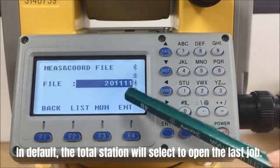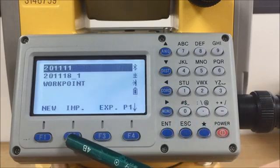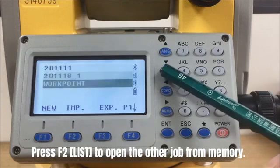By default, the total station will select to open the last job. Press F2 List to open another job from memory.